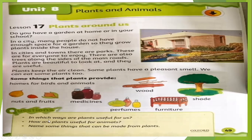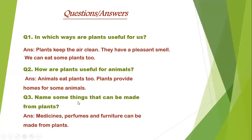Now we have question answers. In which ways are plants useful for us? Plants keep the air clean, they have a pleasant smell, and we can eat some plants too. How are plants useful for animals? Animals eat plants too, and plants provide homes for some animals — birds make their nests in different plants and trees. Name some things that can be made from plants: medicines, perfumes, and furniture.